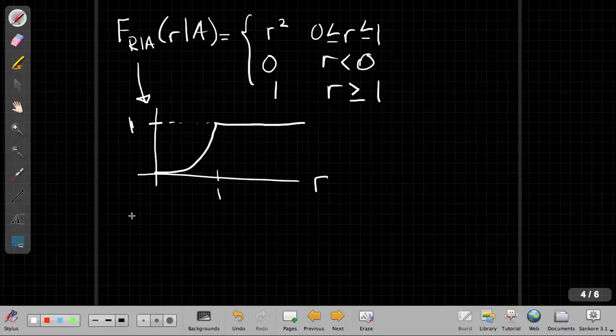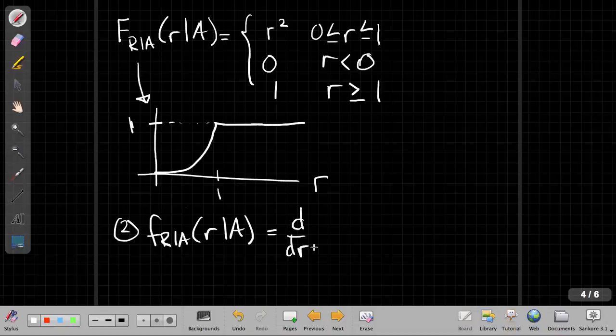So now, step two, I'm going to say, now I want the conditional PDF. I'm going to take the derivative with respect to the outcome, which is little r in this case, of the conditional distribution. So just as normal densities are derivatives of normal distributions, conditional densities are derivatives of conditional distributions.